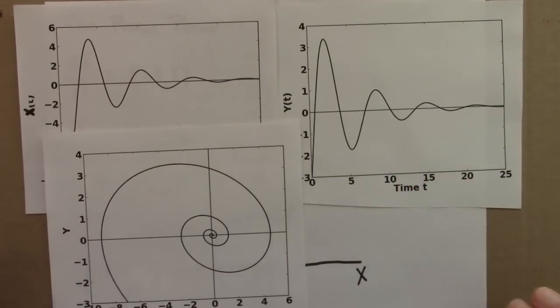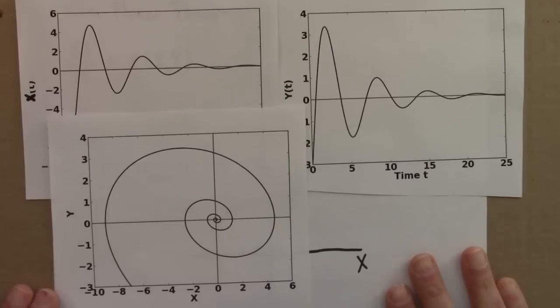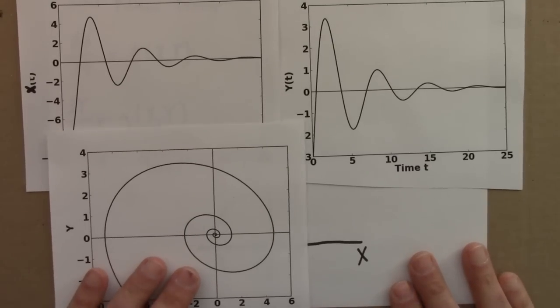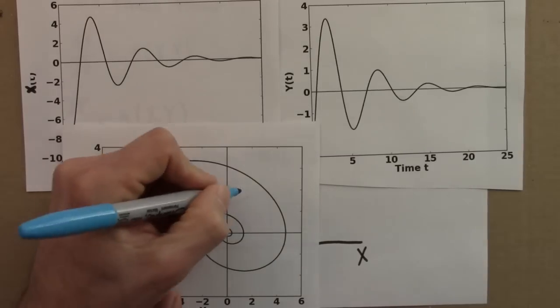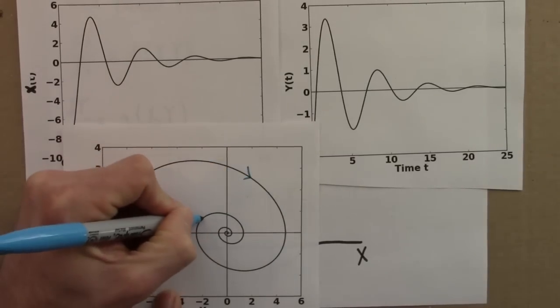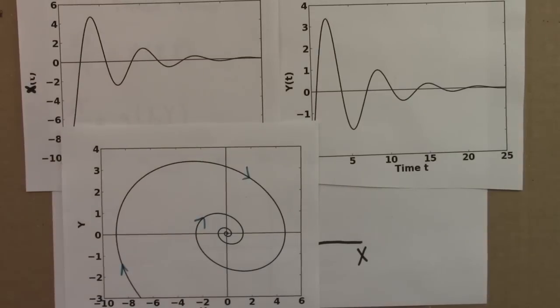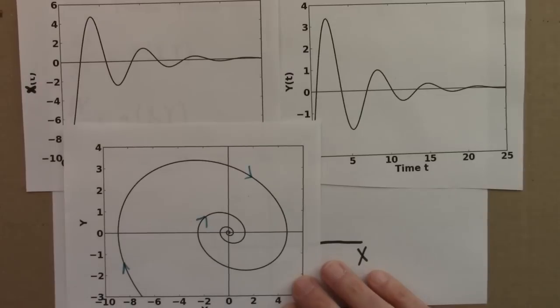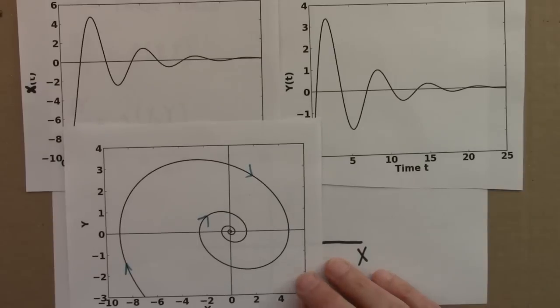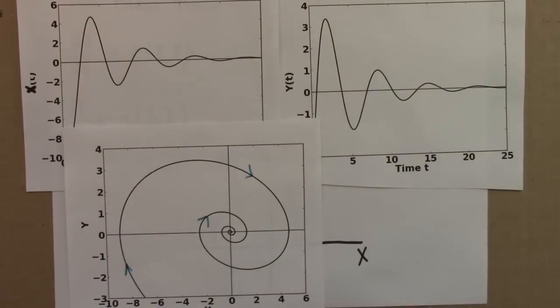Let me show you what a computer plot of this would look like. I can sneak that over here. Try to get this all on the screen. There we go. And I should put arrows on this. My program doesn't do that automatically. So we have something spiraling in to the origin. This is a stable fixed point at x equals 0, y equals 0. So that was one example. Let me do one more.